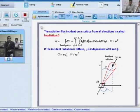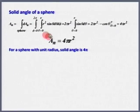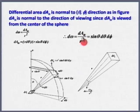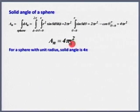VNIT Nagpur. A participant asks: how do we calculate solid angle for a hemisphere? We have already done this for a sphere. Solid angle is dA_n divided by R squared, and for a full sphere that gives 4π. You integrate with the appropriate limits.